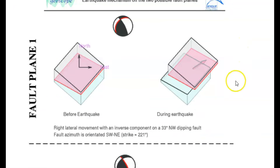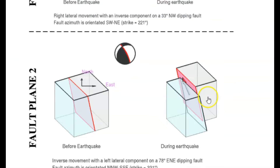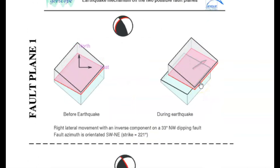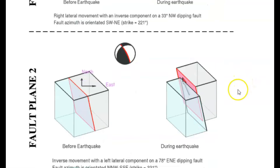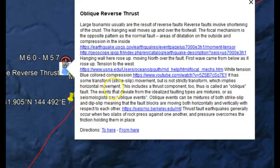Here you can see as the fault moved — here we got it rising up, and this is why it's called an oblique earthquake. You can see it kind of moved northeast a little bit, and then the hanging wall rose up. So we got horizontal movement; this indicates a thrust component too, thus called an oblique fault.